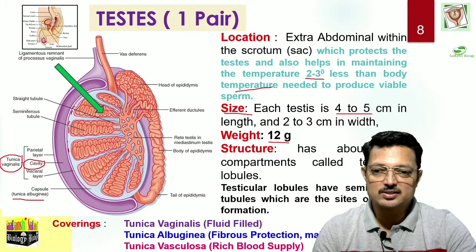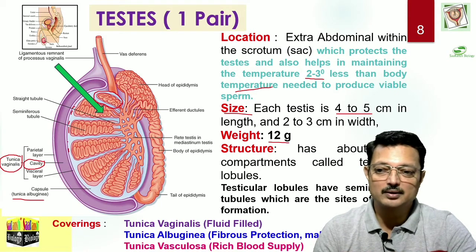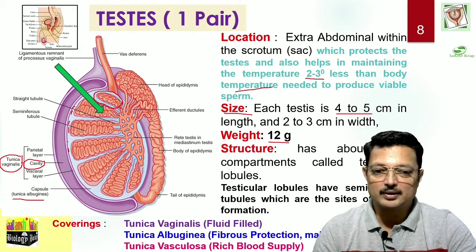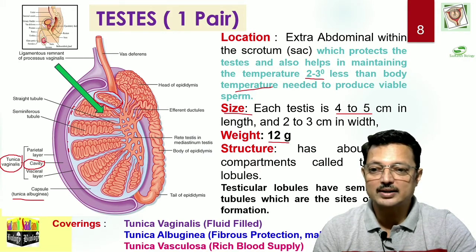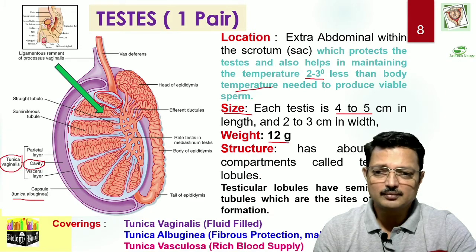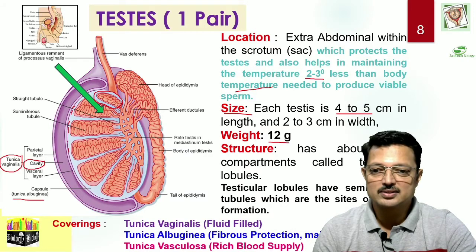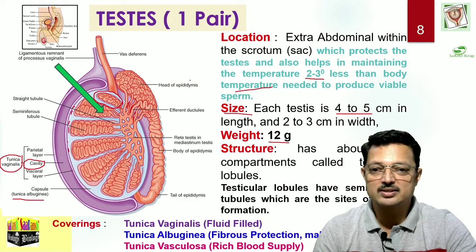As far as the structure of the testes is concerned, there are around 250 compartments — small compartments made by the tunica albuginea. These form testicular lobules, which are the actual sites of production of sperm. The seminiferous tubules within them try to come out and form a network of tubules called the rete testis, and the rete testis comes out in the form of efferent ductules which form the epididymis. The epididymis is regionated into a head region, a body region, and a tail region, and ultimately leads out through the vas deferens.